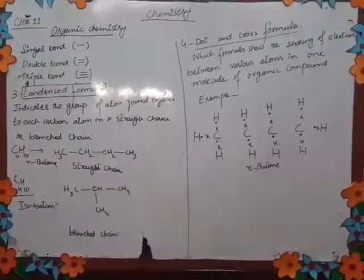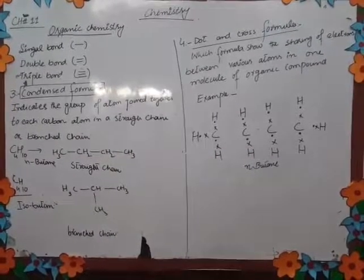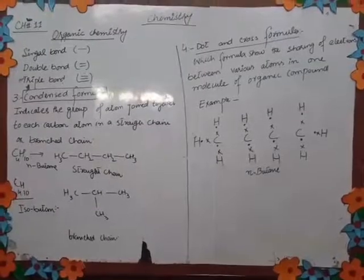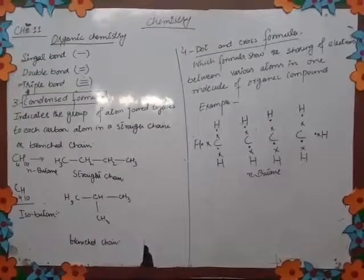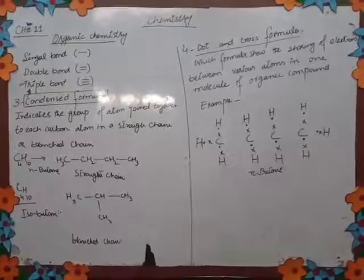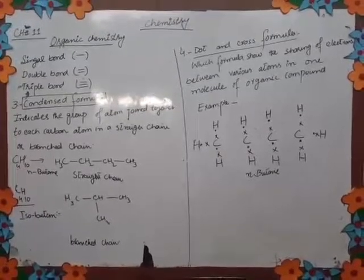This is the condensed formula. The formula indicates the group of atoms joined together. This is the straight chain and branch chain. The structure is represented by the carbon functions.